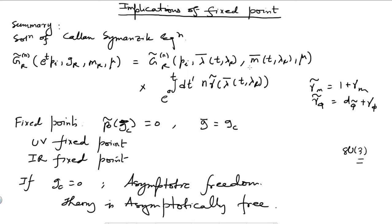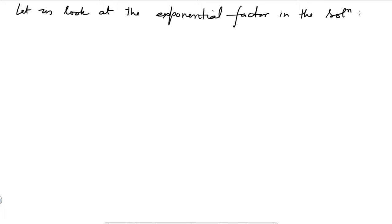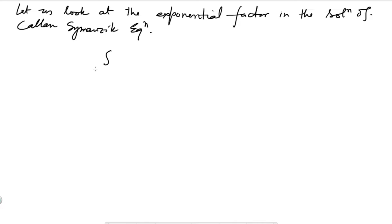Let us look at the implications of this by analyzing the exponential factor in the solution of the Callan-Symanzik equation and see what effect having a fixed point has on it. The exponential factor is e to the integral from 0 to t of dt' times n times gamma-tilde.